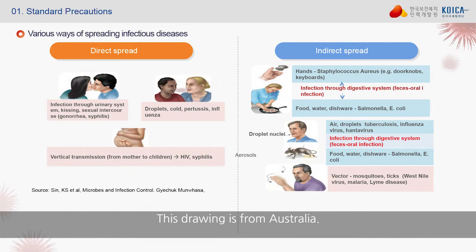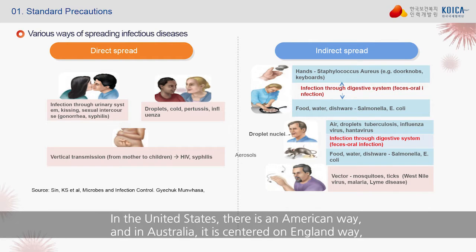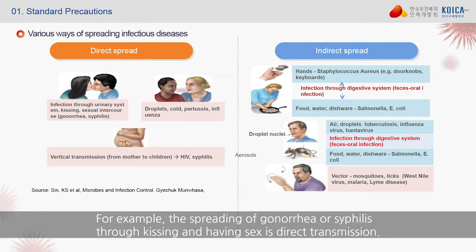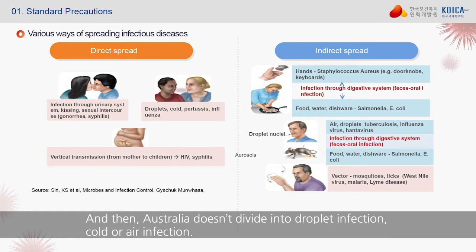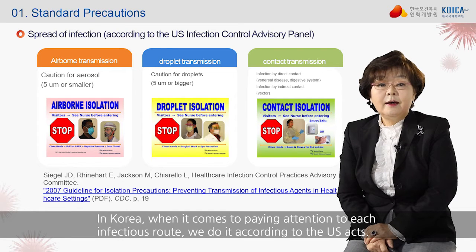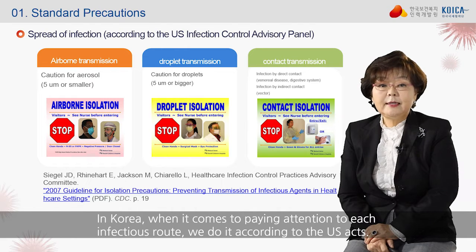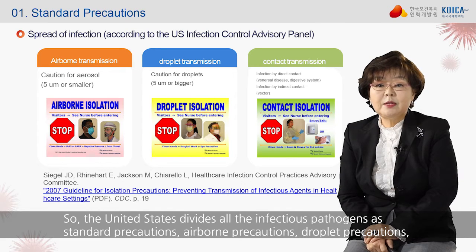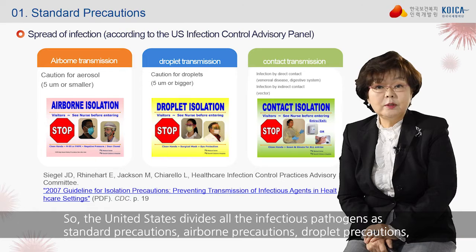This drawing is from Australia. I am not dividing all standard precautions, but going to divide it into two. In the United States there is an American way, and in Australia it is centered on the English way, which is either direct or indirect transmission. For example, the spreading of gonorrhea or syphilis through kissing and having sex is direct transmission. In Korea, when it comes to each infectious route, we follow the US approach, which divides all infectious pathogens as standard precautions, airborne precautions, droplet precautions, and contact precautions.